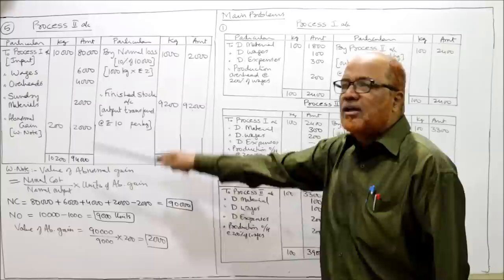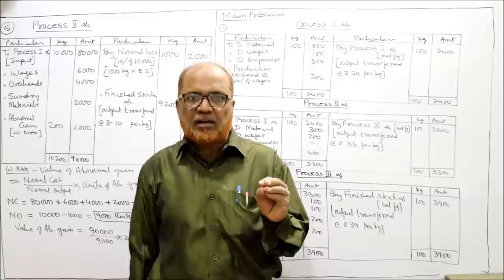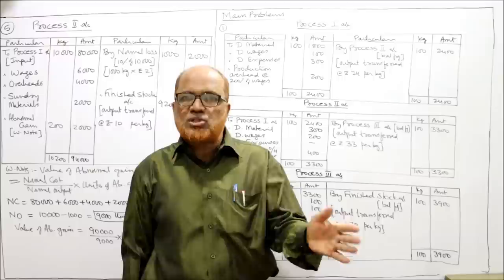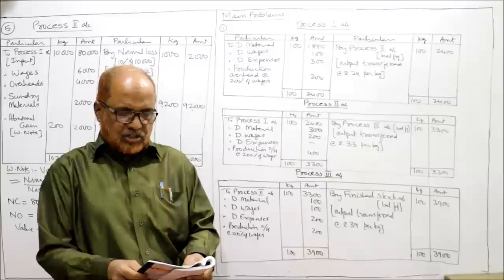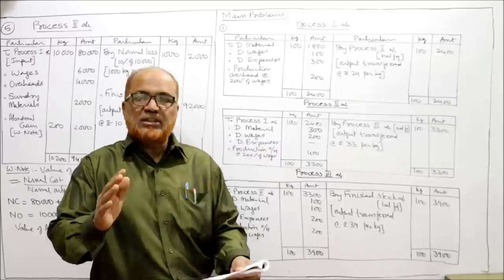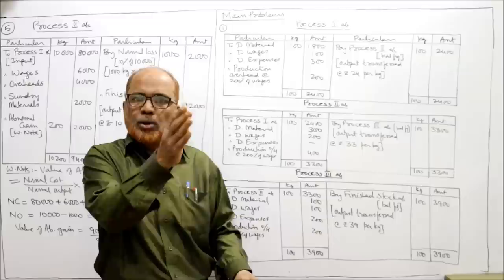We have completed five short problems — the basic problems. Now we are moving to the main problems where we prepare Process 1, Process 2, and Process 3 accounts. The first main problem: Product X is produced after three distinct processes. The main product X passes through Process 1 account, Process 2 account, and Process 3 account.